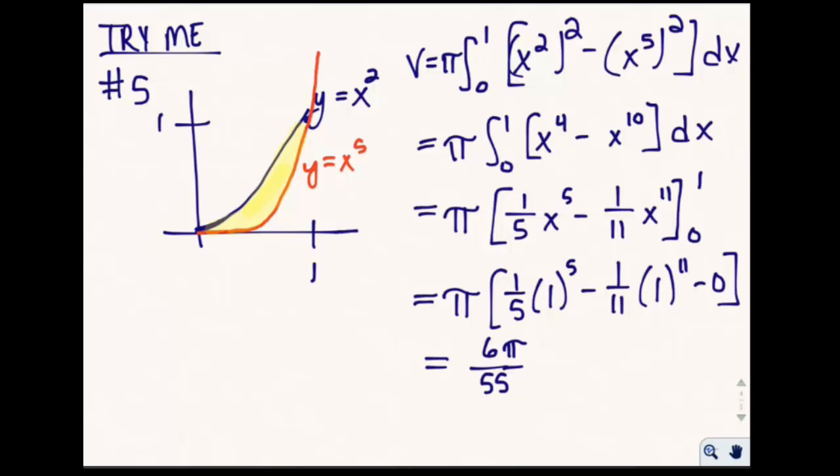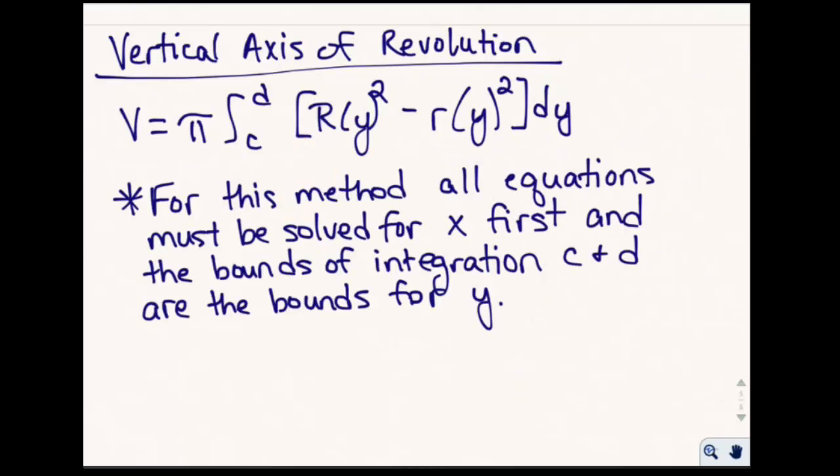That's our answer for the volume of the solid of revolution. Now we're going to talk about finding a solid of revolution revolved around the vertical axis. If we have a vertical axis of revolution, the formula is relatively similar — both functions are with respect to y, meaning you solve for x first, your bounds c and d are bounds on y, and you integrate with respect to y.